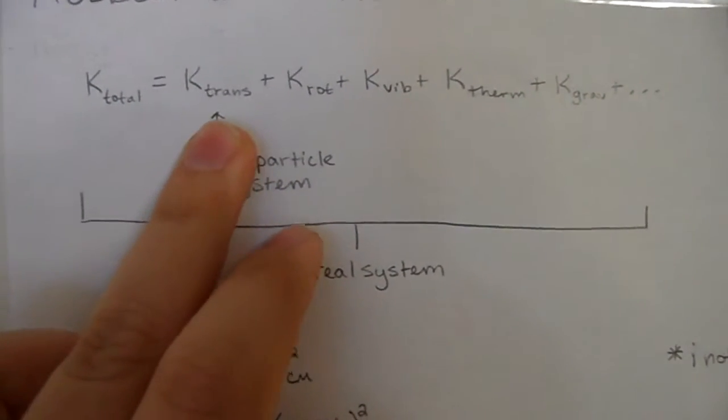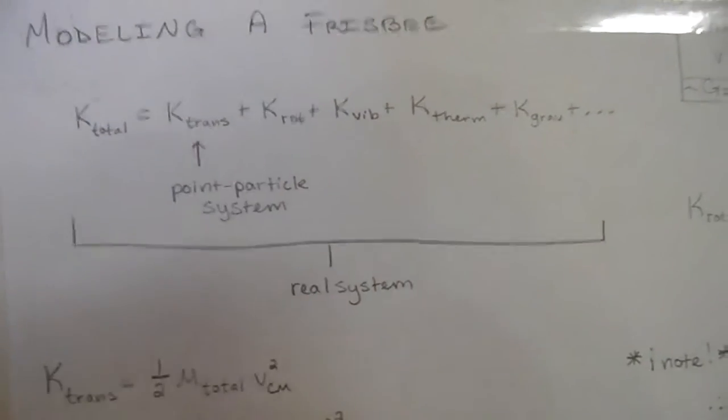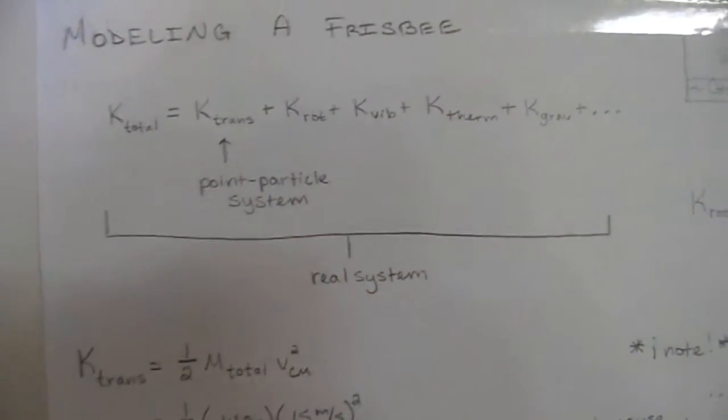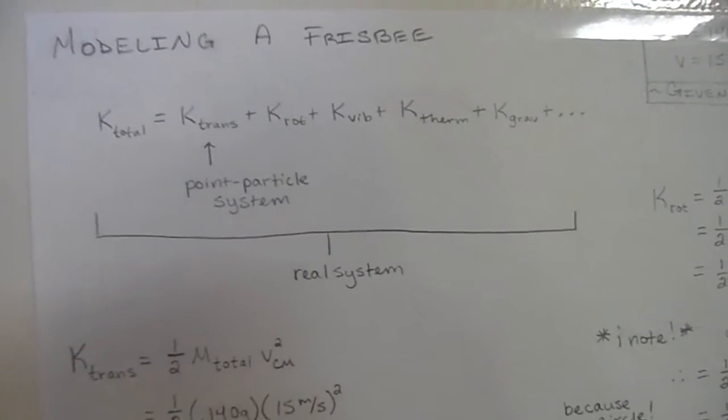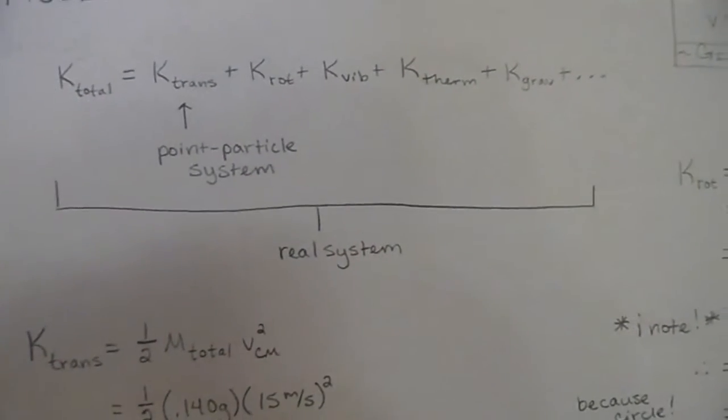However, the point particle system is only the kinetic translational energy and the reason for that being is that the point particle system is essentially when you take an object and you crunch it down to only a single point.